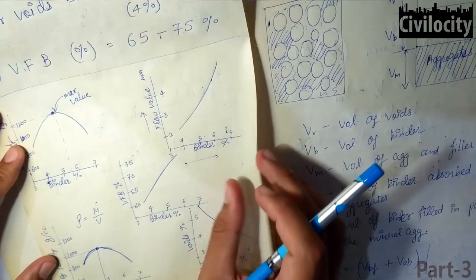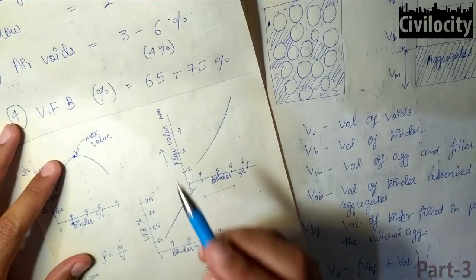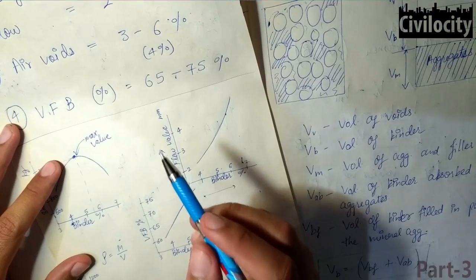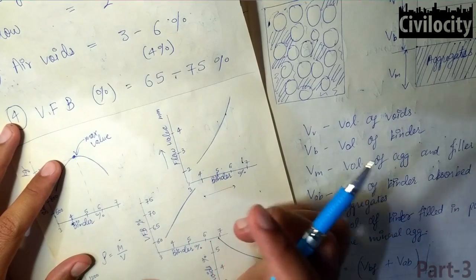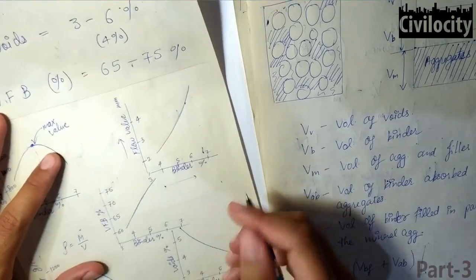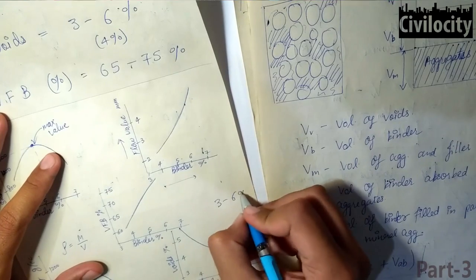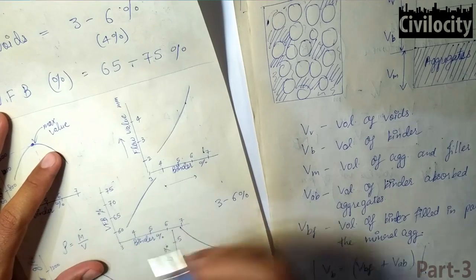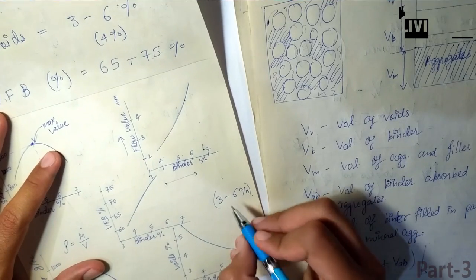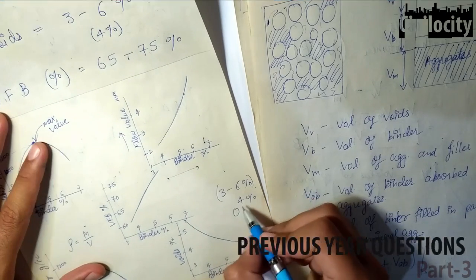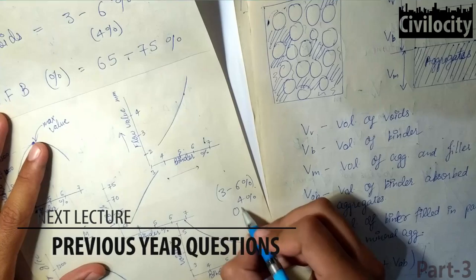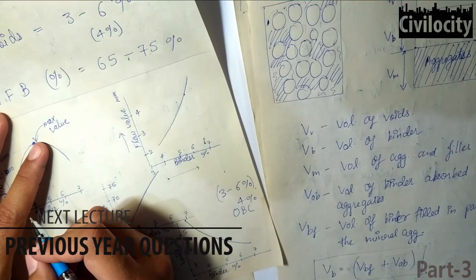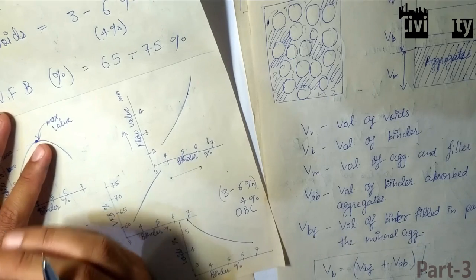The National Asphalt Pavement Association has suggested that the binder content corresponding to the mid-value of the specified range of air voids — which is 3 to 6 percent — may be considered as the optimum binder content. Therefore, 4 percent is considered the optimum binder content. This covers the Marshall mix design, and after this we will solve some GATE exam questions.